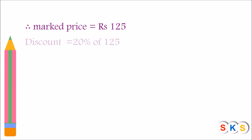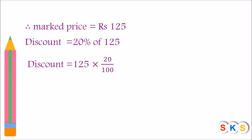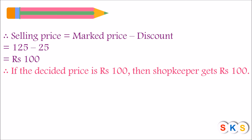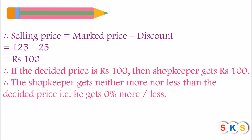Now he offers a discount of 20 percent on the mark price of 125. Discount equals 20 percent of 125, that is 125 into 20 upon 100, which equals rupees 25. So the selling price equals mark price minus discount: 125 minus 25 equals rupees 100. The decided price was rupees 100 and the shopkeeper sold it for rupees 100. Since the selling price equals the decided price, the shopkeeper gets neither more nor less — that is, he gets zero percent more or less.